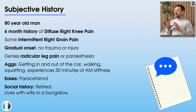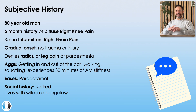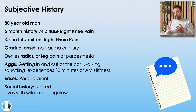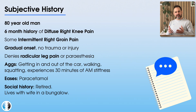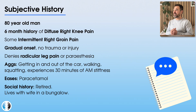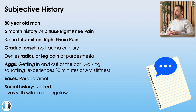We have an 80-year-old man who has a six-month history of diffuse right knee pain — their pain is diffuse, spread all over the knee. They also have some intermittent occasional right-sided groin pain, the same side as their knee pain. The patient feels the knee is the predominant factor, and they're not really sure why it started — it seemed to come on gradually, with no particular trauma or injury.